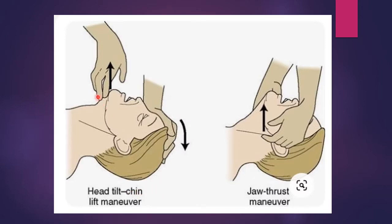Here is the chin lift maneuver to prevent the tongue from falling backward — simply lifting the chin up and extending the head prevents tongue obstruction. The jaw thrust maneuver involves placing the hands behind the neck and angle of the mandible, physically lifting the jaw forwards to pull the mylohyoid and myloglossus muscles and tongue forward, preventing it from falling back onto the laryngeal opening.